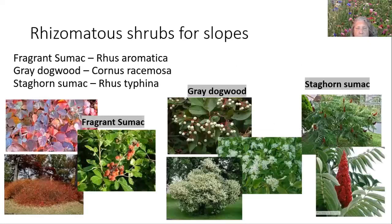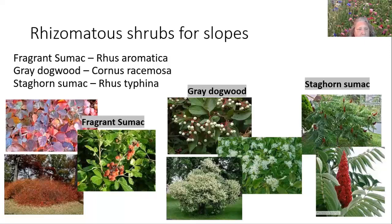Here are some rhizomatous shrubs for slopes — all native shrubs. Fragrant sumac, Rhus aromatica, is a low-growing shrub with good fall color, interesting leaf shape, and it's fragrant. These are not poison sumac — we don't have poison sumac here in Northern Virginia. Fragrant sumac is a low-growing shrub we have at our teaching garden in Bristow, and it's really good at holding the soil. It can handle part sun and full sun — I have mine in shade and it does fine, it just doesn't get as lush in shade.